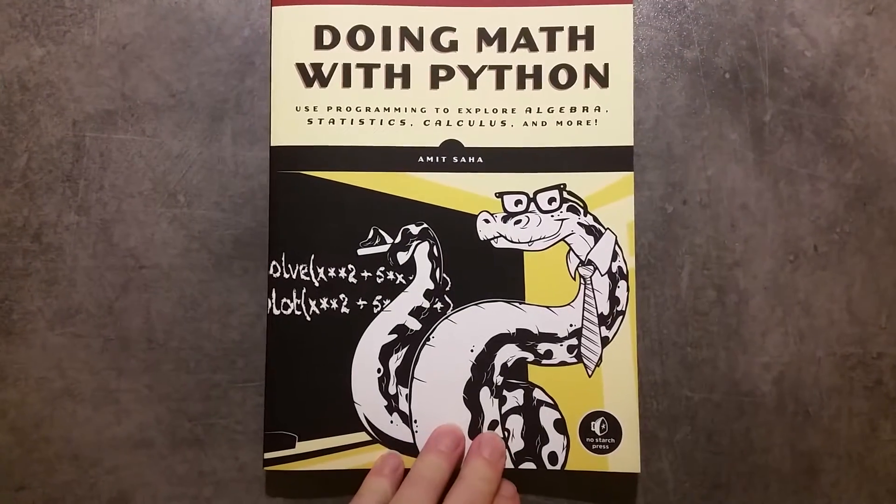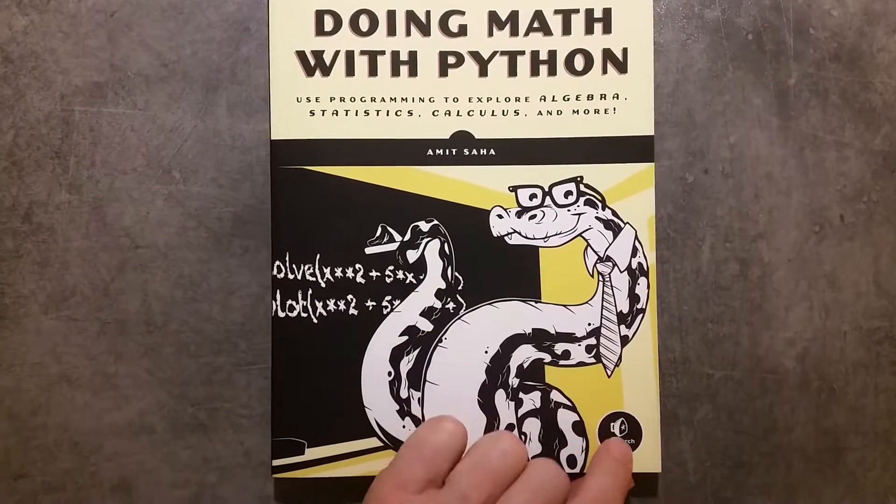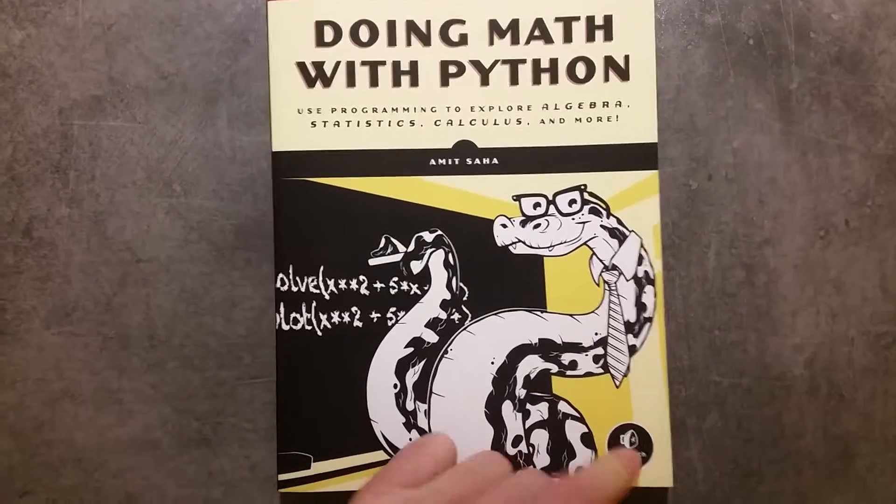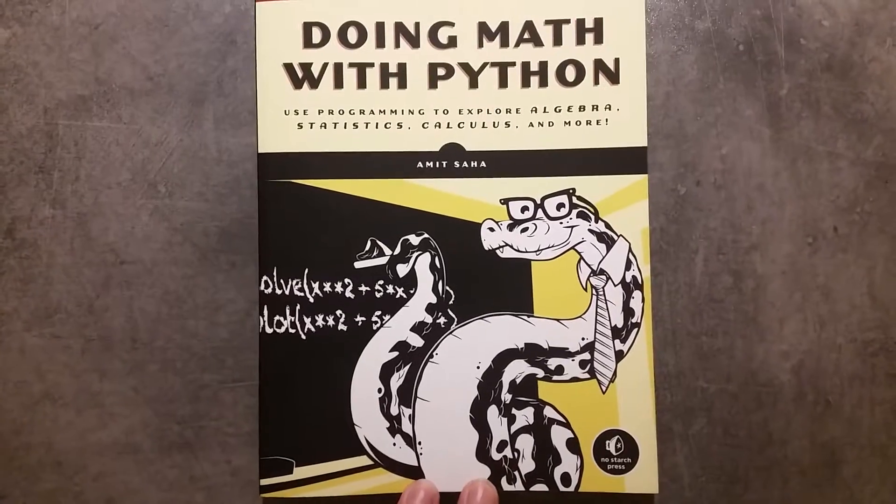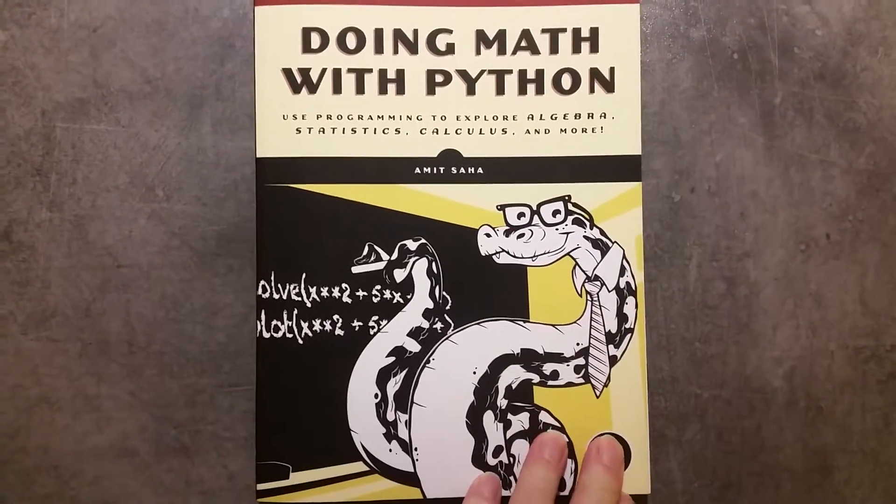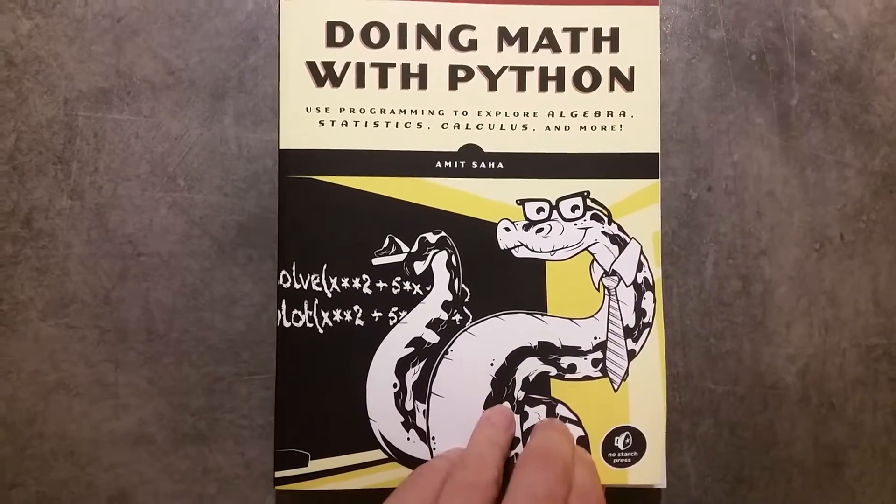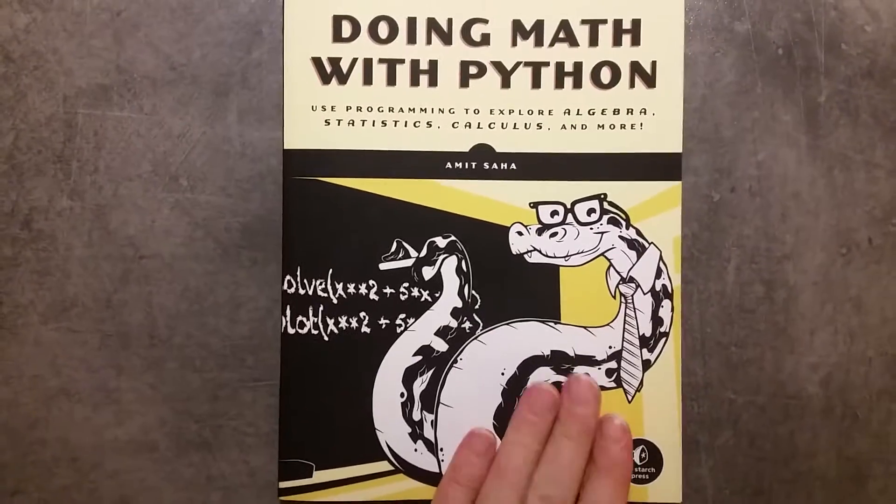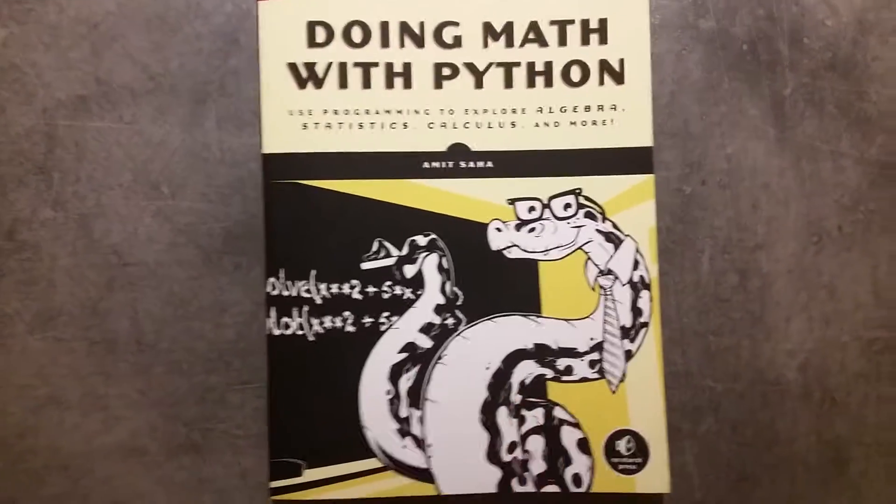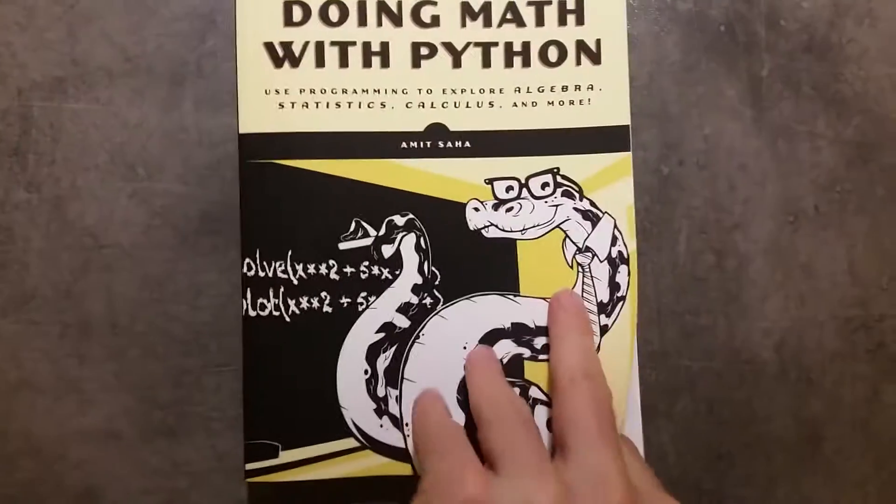So we're going to have a look at doing math with Python. Now this is a book that will show you how to visualize data and model data, but it starts from the basics. I would say it's aimed at people in high school or doing A-levels, it's not aimed at undergraduate scientists that want to do computational physics or something like that, but it's a good start, a good place to start if that's where you want to end up one day. So let's have a look.